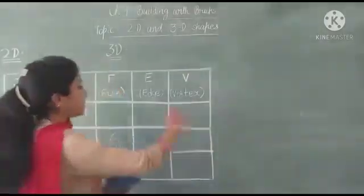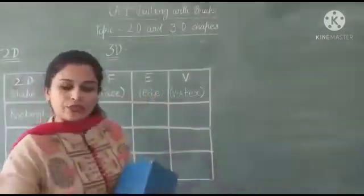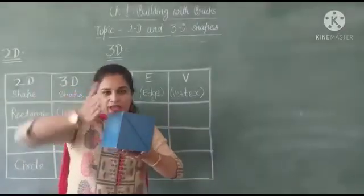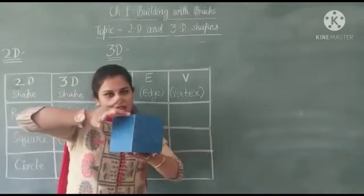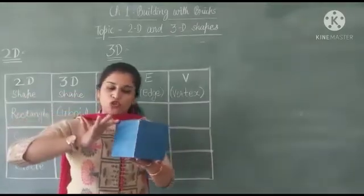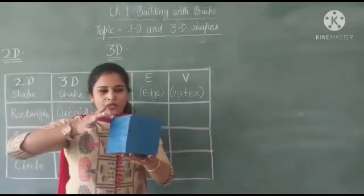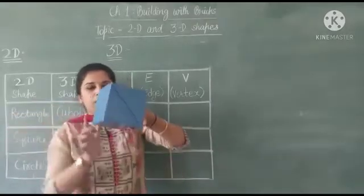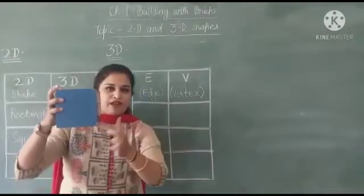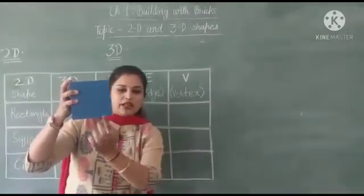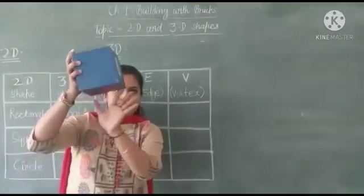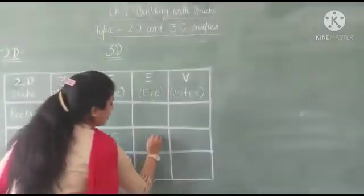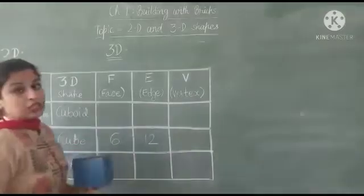And now we are coming to edge. What are edge? Where 2 faces are meeting. 1 face, 2 face. They are meeting here. This is edge. So let's count the edges. 1, 2, 3, 4, 5, 6, 7, 8, 9, 10, 11, 12. So how many edges we are having? 12 edges we have in cube.